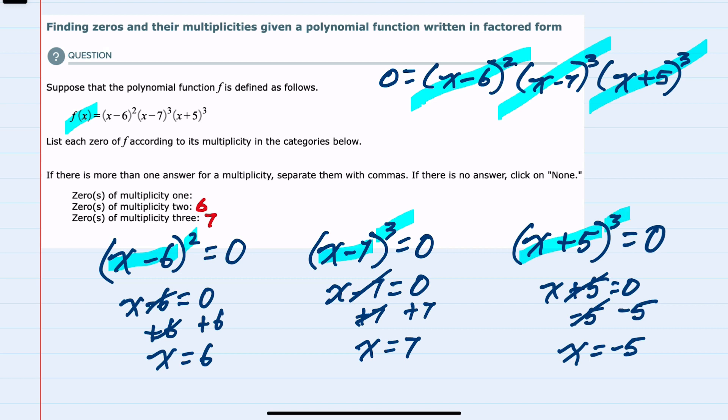But here again, since it was cubed, this multiplicity is 3. So we have two solutions with a multiplicity of 3. Notice we didn't have any solutions that had a multiplicity of 1.